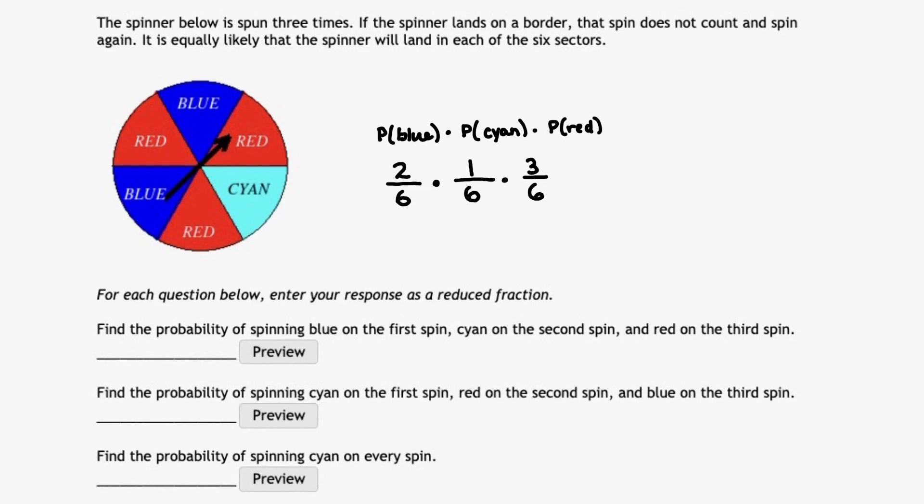The probability of getting blue followed by cyan followed by red can be thought of as two-sixths times one-sixth times three-sixths. Or if we multiply those all together, we would get two times three on the top, which is six, over six to the third on the bottom.